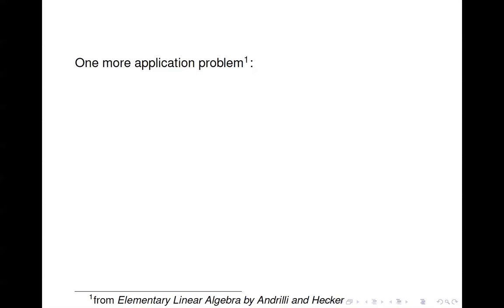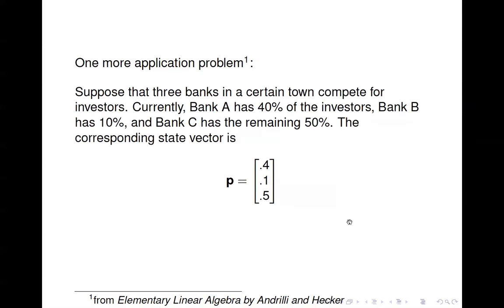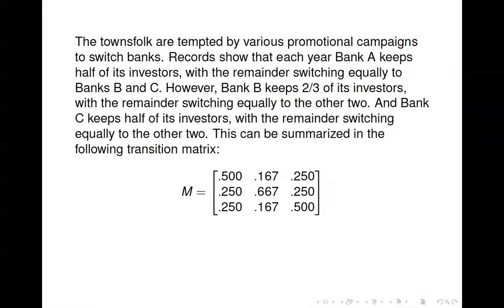Here's another application problem about three competing banks. Bank A currently has 40 percent of customers, bank B has 10 percent, and bank C has 50 percent — written as the vector (0.4, 0.1, 0.5). Records show that each year bank A keeps half its investors, with the remainder switching equally to B and C.